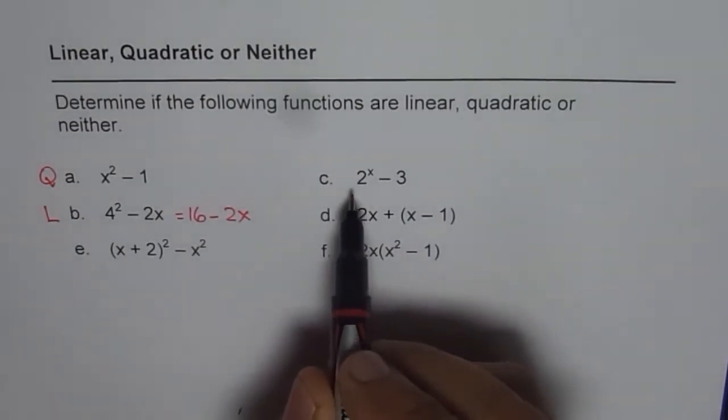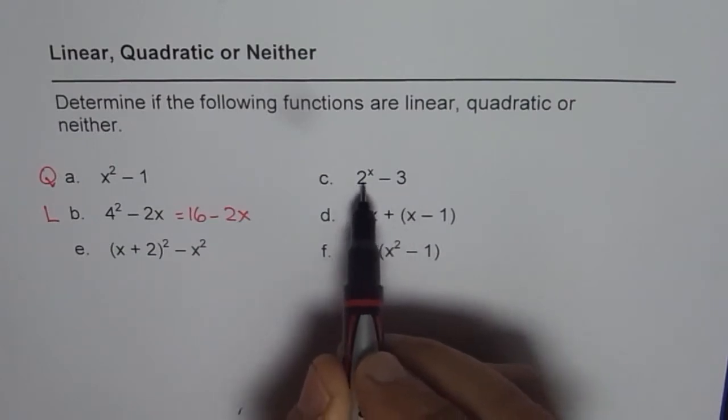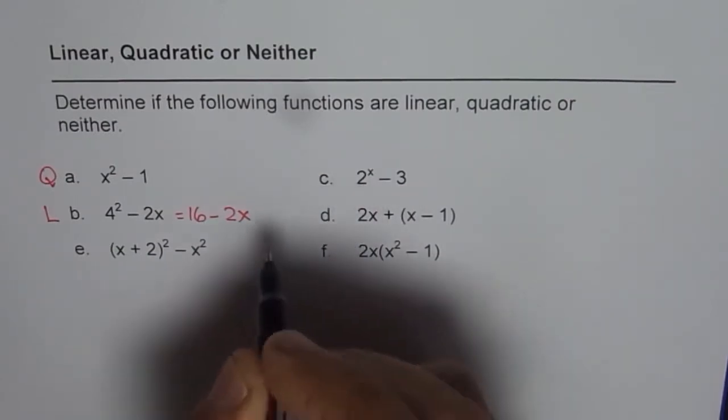Now we will move on to C: 2^x - 3. This is an exponential function. Here, x is on the exponent, so it is neither.